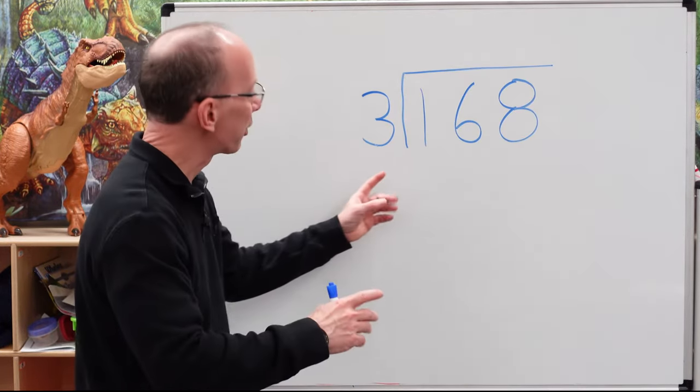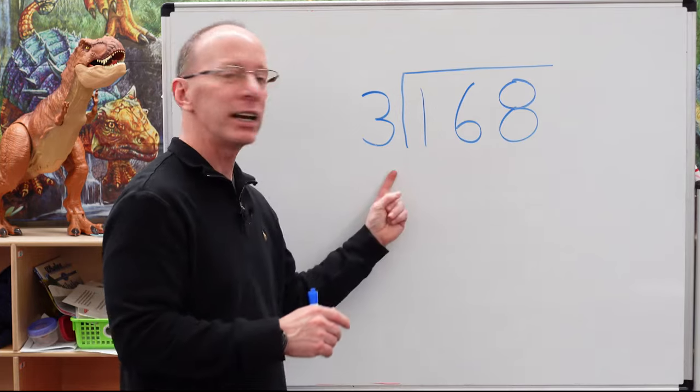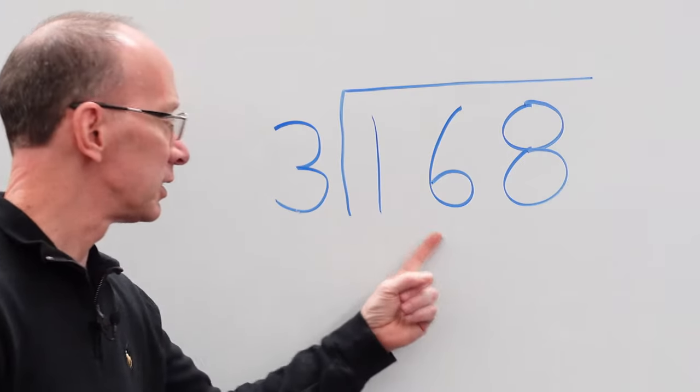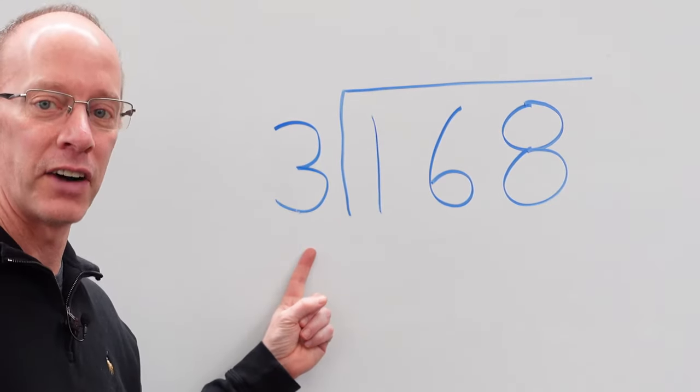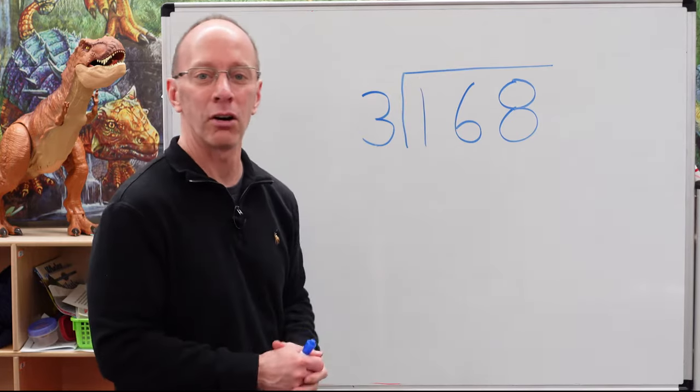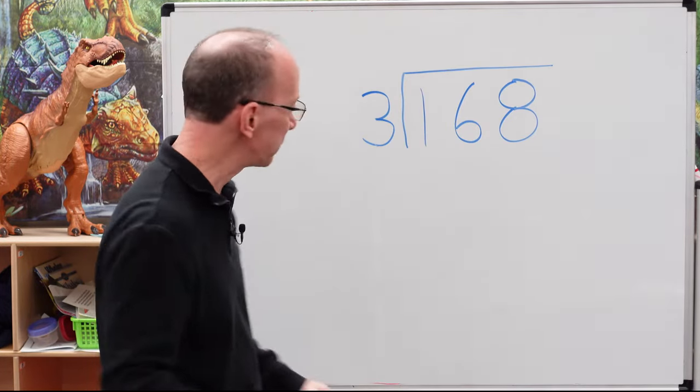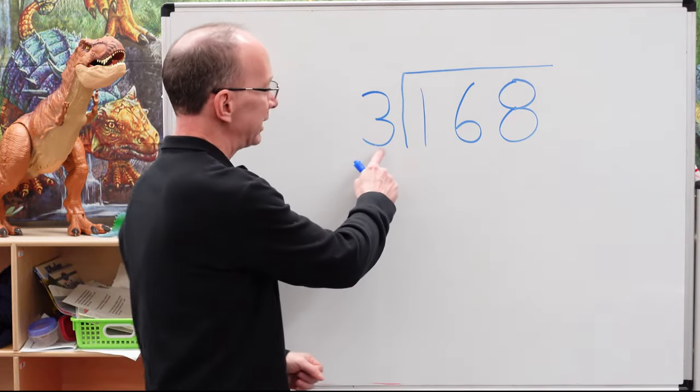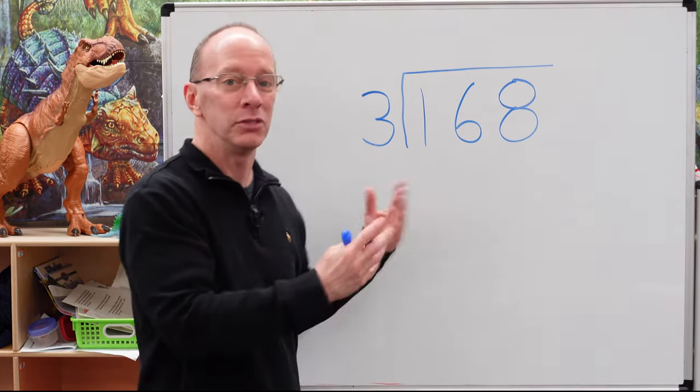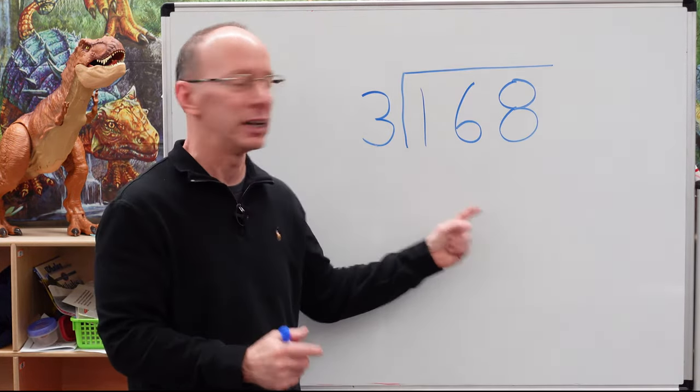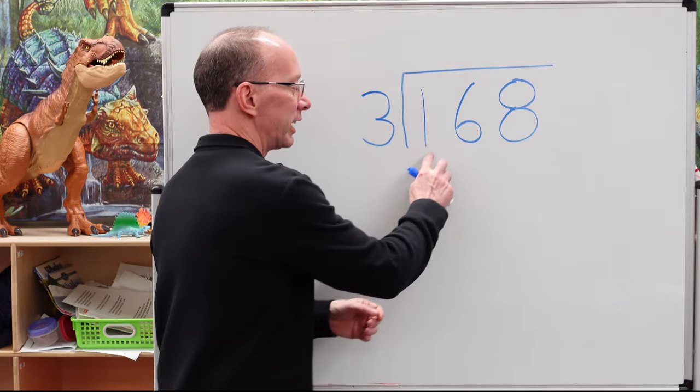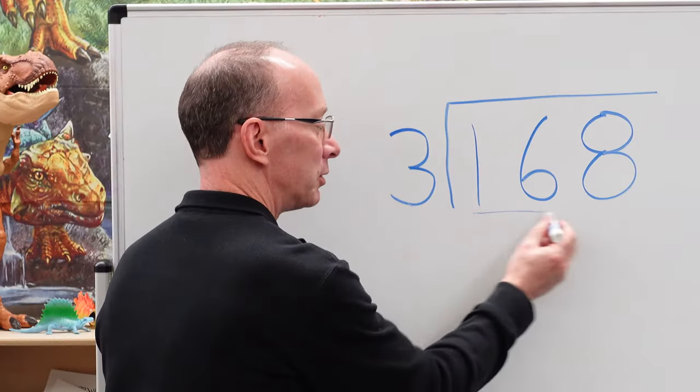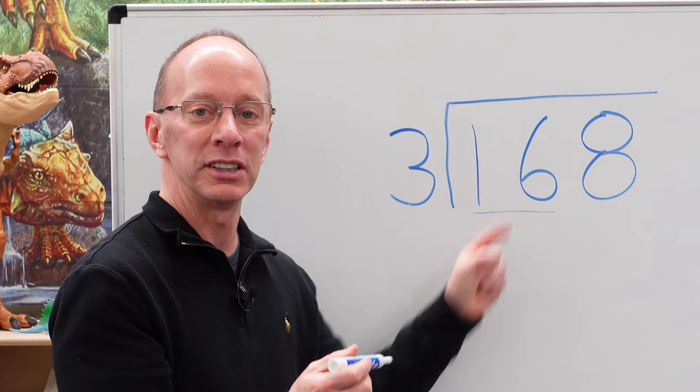First of all, we have a three digit number right here divided by a one digit number. This is the dividend and this is the divisor. And our answer is going to be called a quotient. So let's begin. First of all, can I take this number and put it into this number? No, you can't. You can't put three into one. So then I need to go to the next set of numbers right here. I need to put the three into the 16.